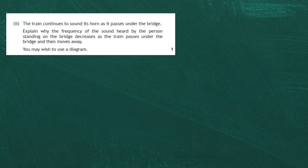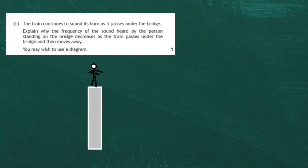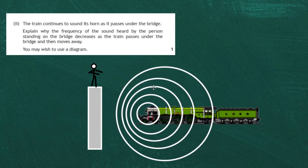Part 2: the train continues to sound its horn as it passes under the bridge. Explain why the frequency heard by the person on the bridge decreases as the train passes and moves away. You may use a diagram. We draw the observer on top of the bridge and show the wavefronts from the horn. As the train moves, at the front the waves are compressed together because the horn is catching up with the wavefronts it produced.